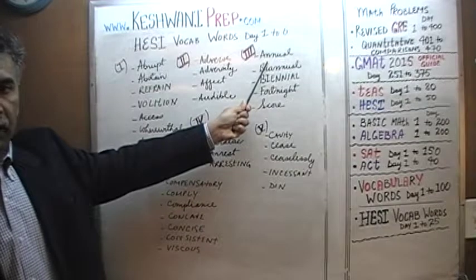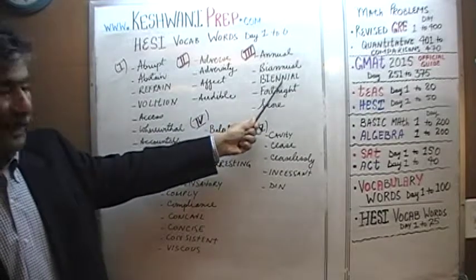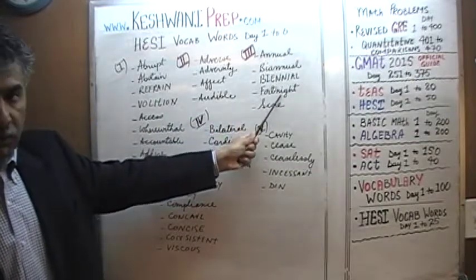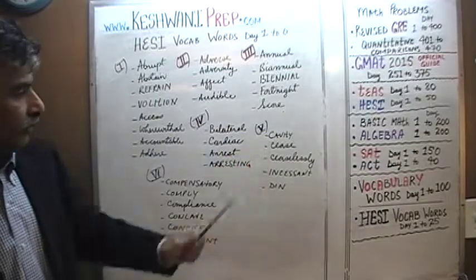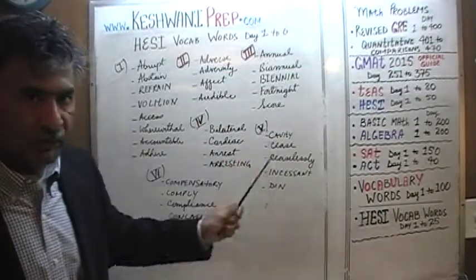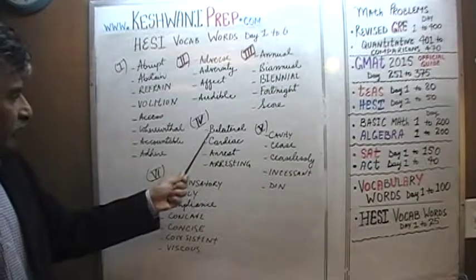Day number three: annual, biannual, biannual, fortnight, and a score. The score has several different meanings — you will learn it. That was day number three.